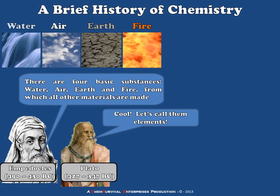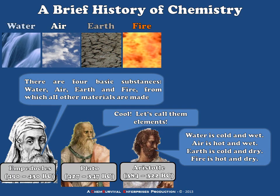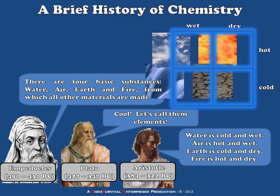Plato's student Aristotle then came along and suggested that not only are there four distinct substances from which all others are made, but that they have a specific set of properties: water being cold and wet, air being hot and wet, earth being cold and dry, and fire being hot and dry. Aristotle's suggestion gives us a way to catalog these elements beyond a simple list — we can create a chart with hot and cold on one axis and wet and dry on the other, and tabulate these substances.